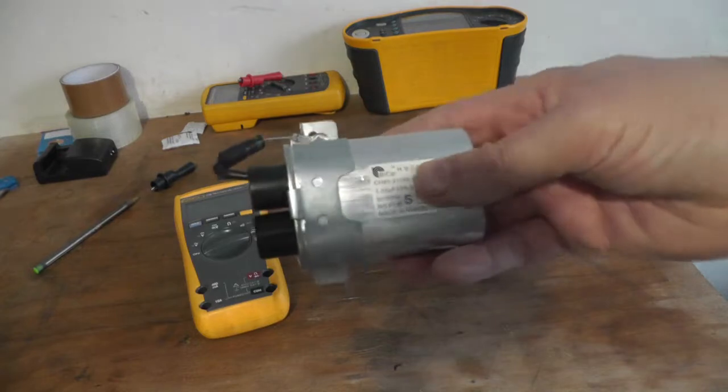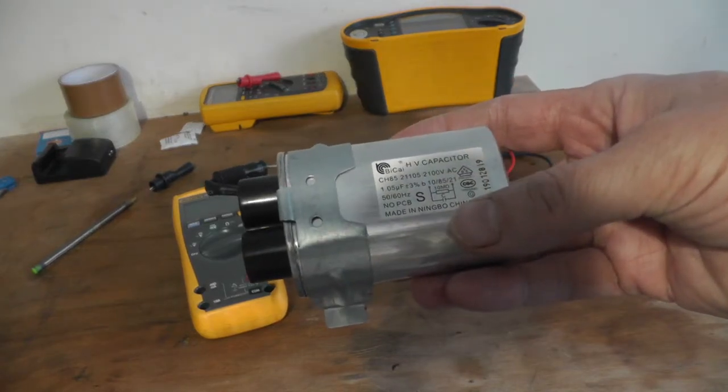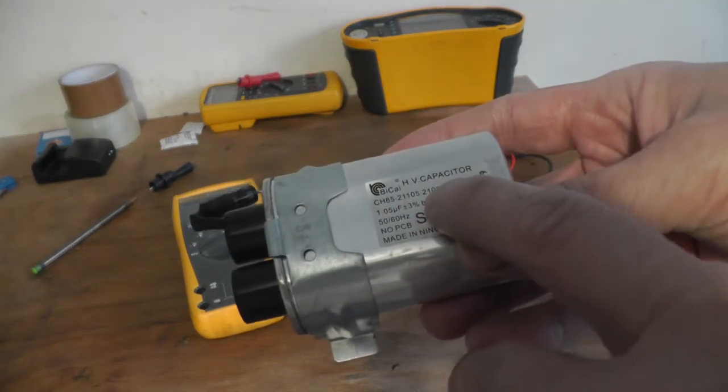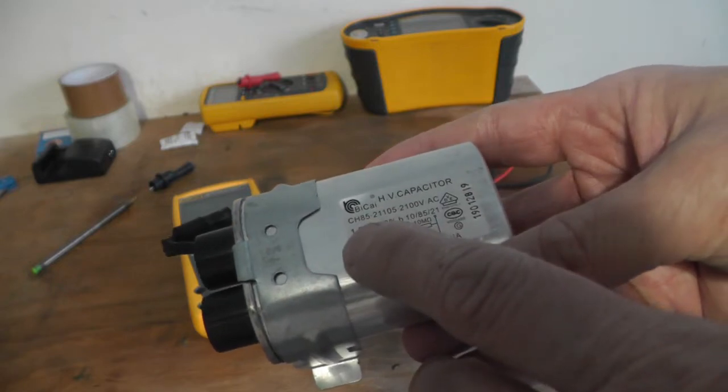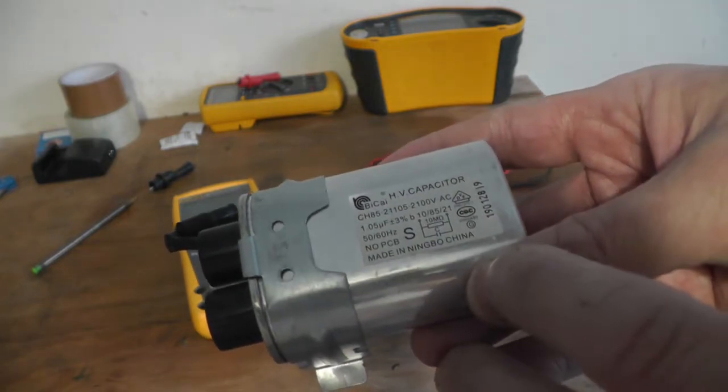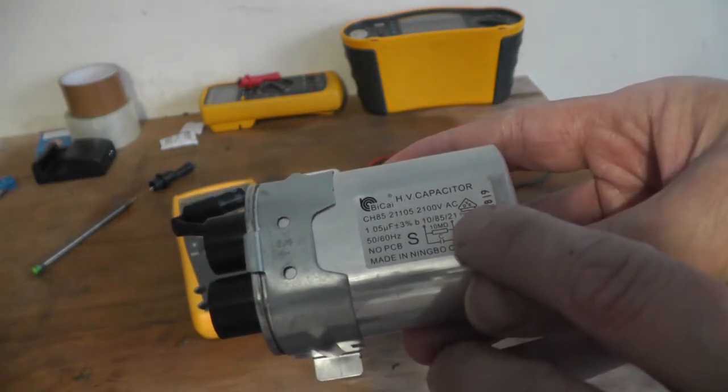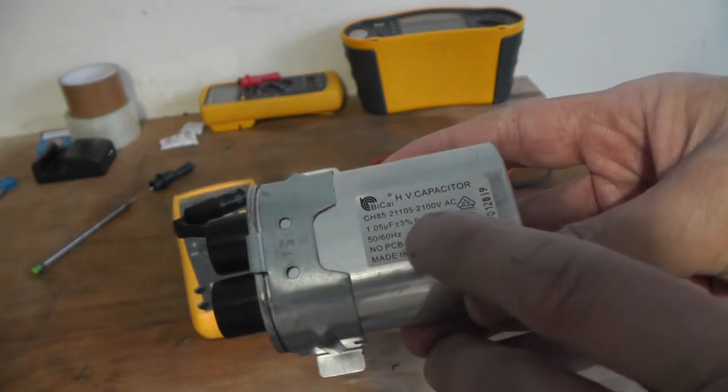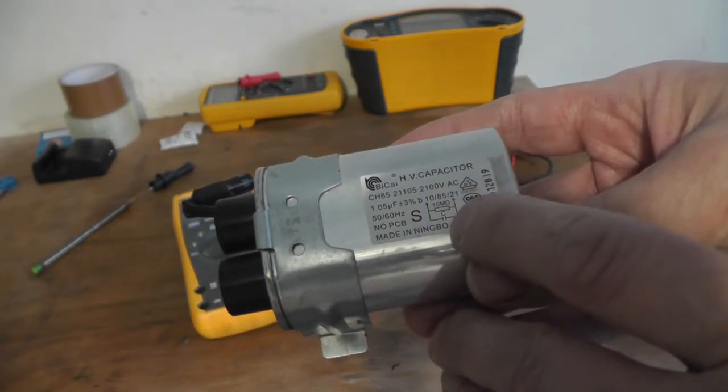So this is a microwave capacitor, it's 2100 volts, one microfarad, with a 10 megaohm resistor in parallel with the capacitor.